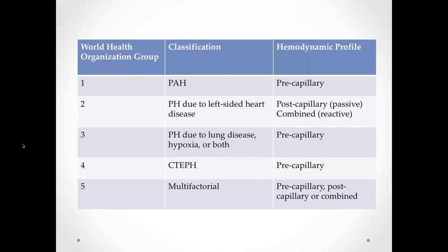In Type 3 PH, which is due to lung disease, hypoxia, or both, this is typically a pre-capillary hemodynamic profile. Type 4, which is chronic thromboembolic pulmonary hypertension, is also a pre-capillary hemodynamic profile. Type 5 is a mixed bag with multiple different underlying etiologies, and it can present with any of the hemodynamic profiles — pre, post, or combined.